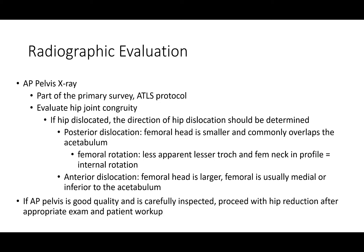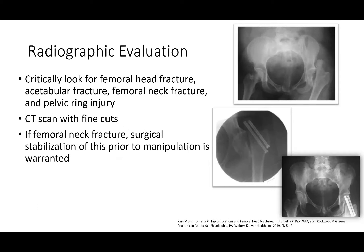On your AP pelvis X-ray, look for hip congruity and you should be able to determine the direction of dislocation. With a posterior dislocation, the head should appear smaller due to less magnification; with an anterior dislocation, it will appear larger. If you have a good image, proceed with hip reduction as soon as possible. Critically evaluate for femoral head fractures, acetabular fractures, femoral neck fractures, and pelvic ring injuries. CT scan with fine cuts can help identify those and may need to be obtained after reduction. If there is a femoral neck fracture, be very careful about stabilization, as a non-displaced fracture can displace. If you have an irreducible dislocation, the head may be impacted, and forcing the reduction risks creating a femoral neck fracture.